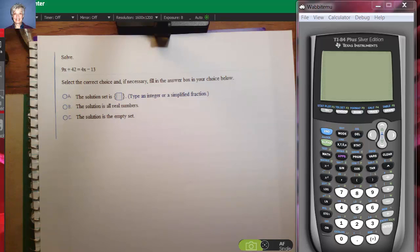The goal with mixed equations is to get your variable terms together on one side of the equal sign and the constant or number terms together on the other side. So let's do that.